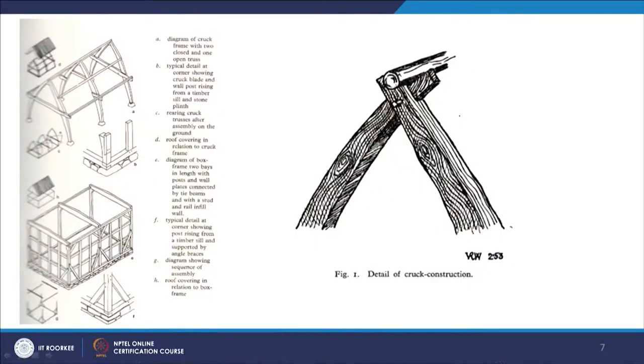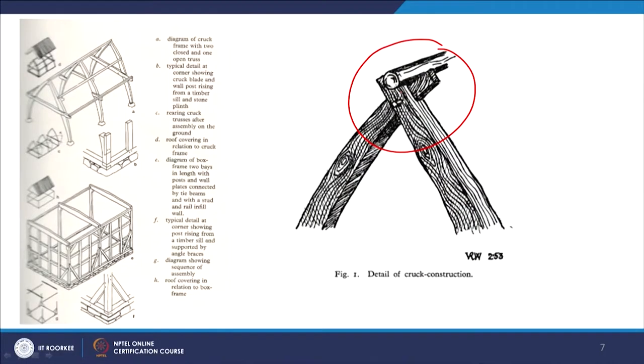Regarding how they join a cruck construction: in traditional methods, they take a large bark of a tree, sometimes cut it in half and reverse it exactly, so it overlaps in a different direction. Sometimes it matches and sometimes they bring in additional pieces — it is a process of trial and error. What you can see here is a kind of lap joint and how it fixes at the top.